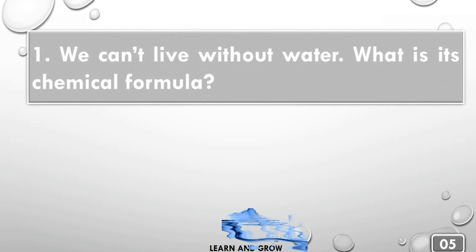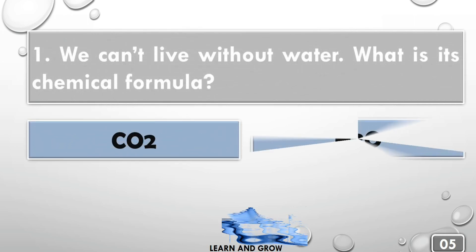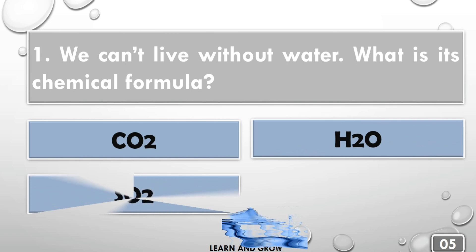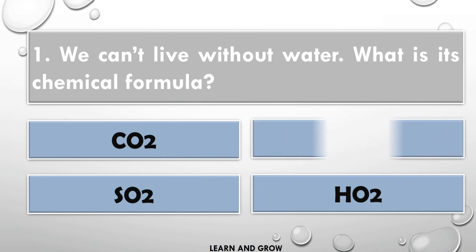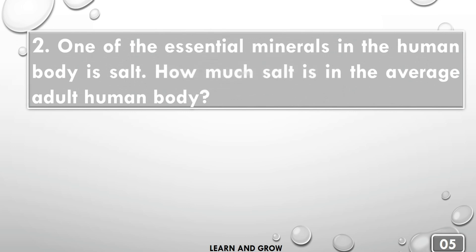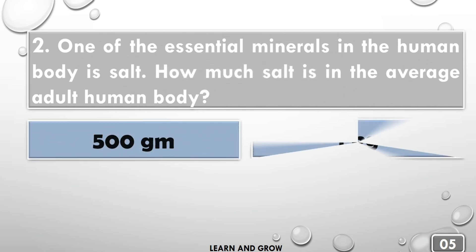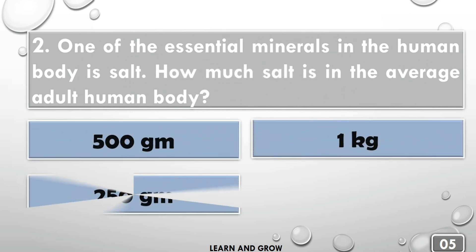We can't live without water. What is its chemical formula? The right answer is H2O. One of the essential minerals in the human body is salt. How much salt is in the average adult human body?